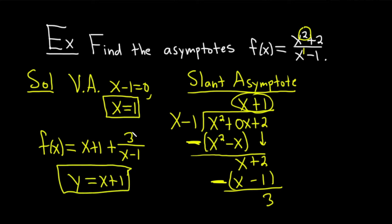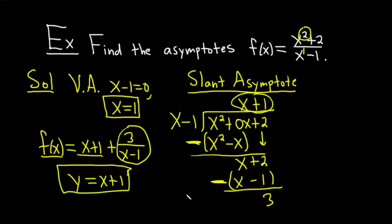The reasoning is that as x gets really, really big — as x approaches infinity — the piece 3 over x minus 1 basically approaches 0, and your function approaches the slant or oblique asymptote. A really cool idea. Hopefully you've learned some math in this video. Make sure to check out Chegg for more videos. Until next time, good luck.